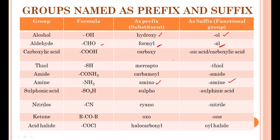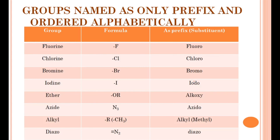Remember: when a functional group is the main functional group, specific suffixes are used — for example, OH as suffix gives '-ol'; as prefix (substituent) it gives 'hydroxy-'. NH2 as suffix gives '-amine'; as prefix it gives 'amino-'. CHO as suffix gives '-al'; as substituent it gives 'formyl-'. Thiol (SH) as suffix gives '-thiol'; as substituent it gives 'mercapto-'. Amide (CONH2) as suffix gives '-amide'; as substituent it gives 'carbamoyl-'. Nitrile (CN) gives '-nitrile' as suffix and 'cyano-' as prefix. Ketone (C=O) gives '-one' as suffix and 'oxo-' as prefix. Some groups — fluorine, chlorine, bromine, iodine, ethers, azide, alkyl, diazo — are only ever used as prefixes, never as the main functional group.